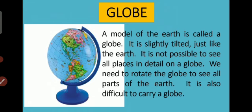When you look at the globe, you will notice that it is mounted on a stand with its axis tilted by 23.5 degrees from the vertical. This is because our earth is actually tilted in this way. It is not possible to see all places in detail on a globe, so we need to rotate it to see all parts of the earth. On the globe there are imaginary lines on which the earth rotates, and the northern end of its axis is the north pole.